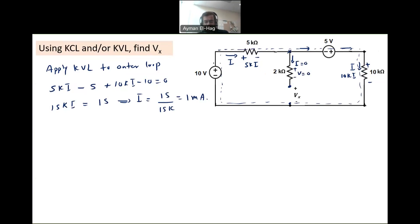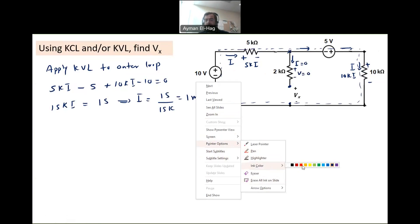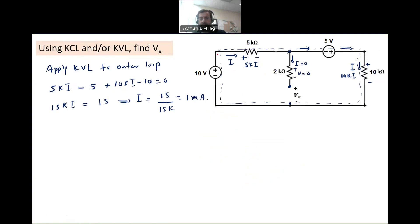So we can do KVL now. Let me change the color to make it clearer. We can make KVL in the loop, in the inner loop, actually, or loop to the left, which is this loop. So we can apply KVL here.